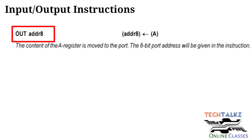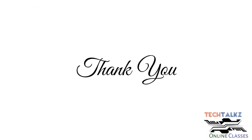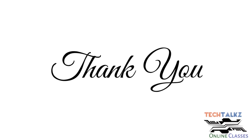The next instruction is OUT with an 8-bit address. OUT is the opposite of IN. The content of the A register is moved to the port. The 8-bit port address is given in the instruction itself. Using IN and OUT instructions, the microprocessor can communicate with I/O devices with the help of this 8-bit address.